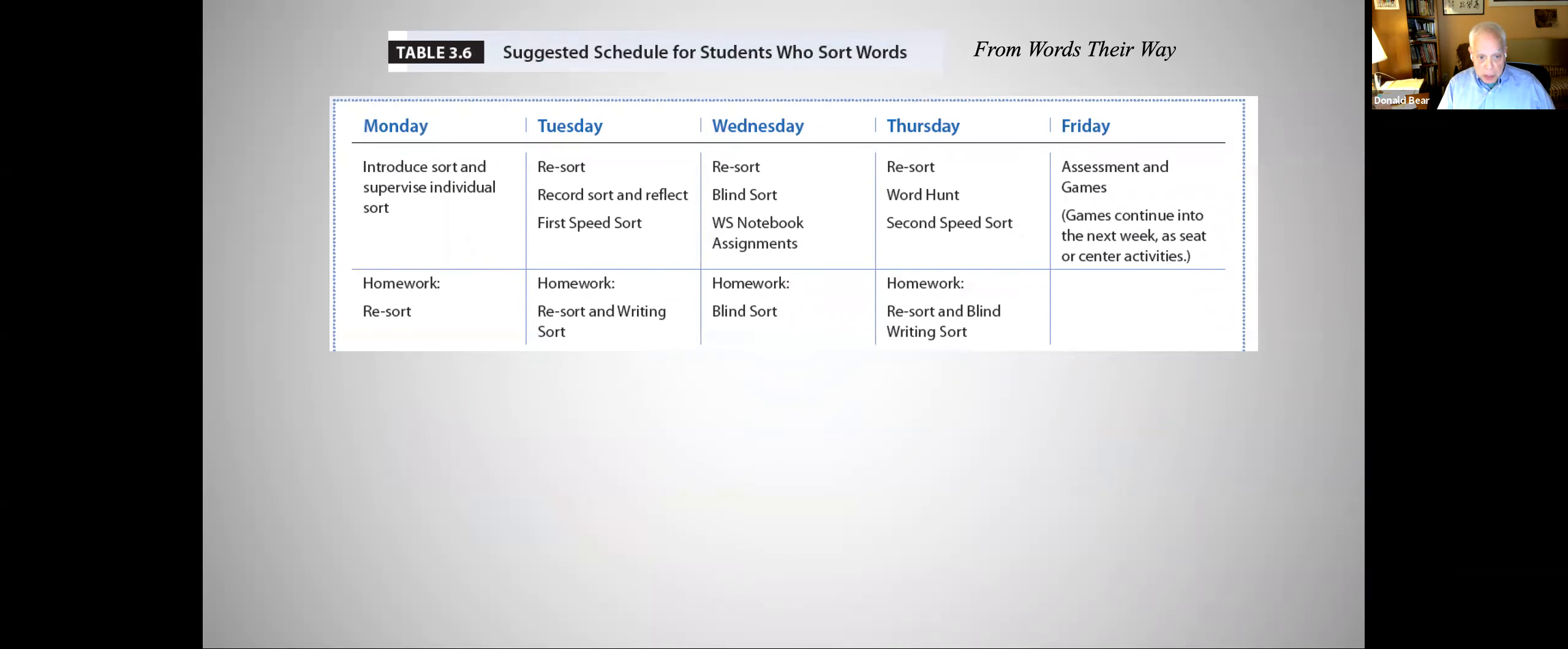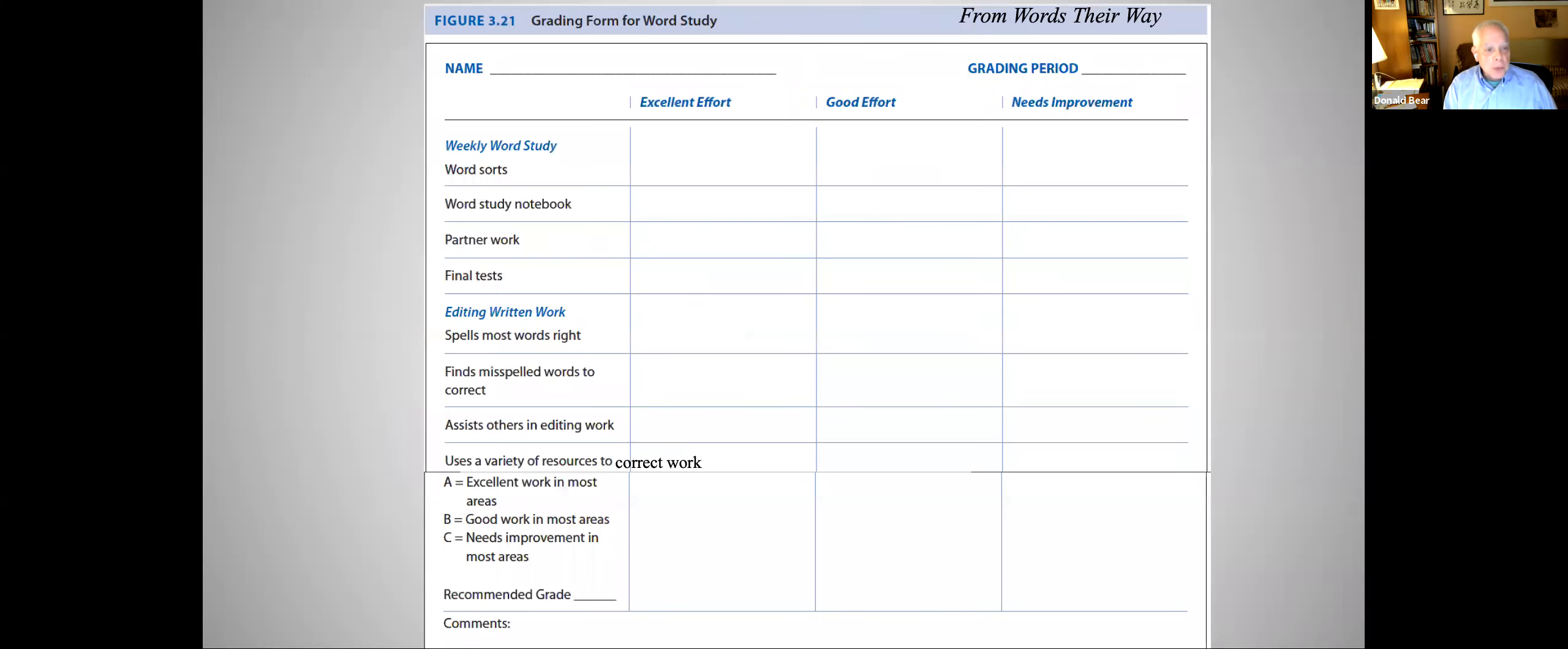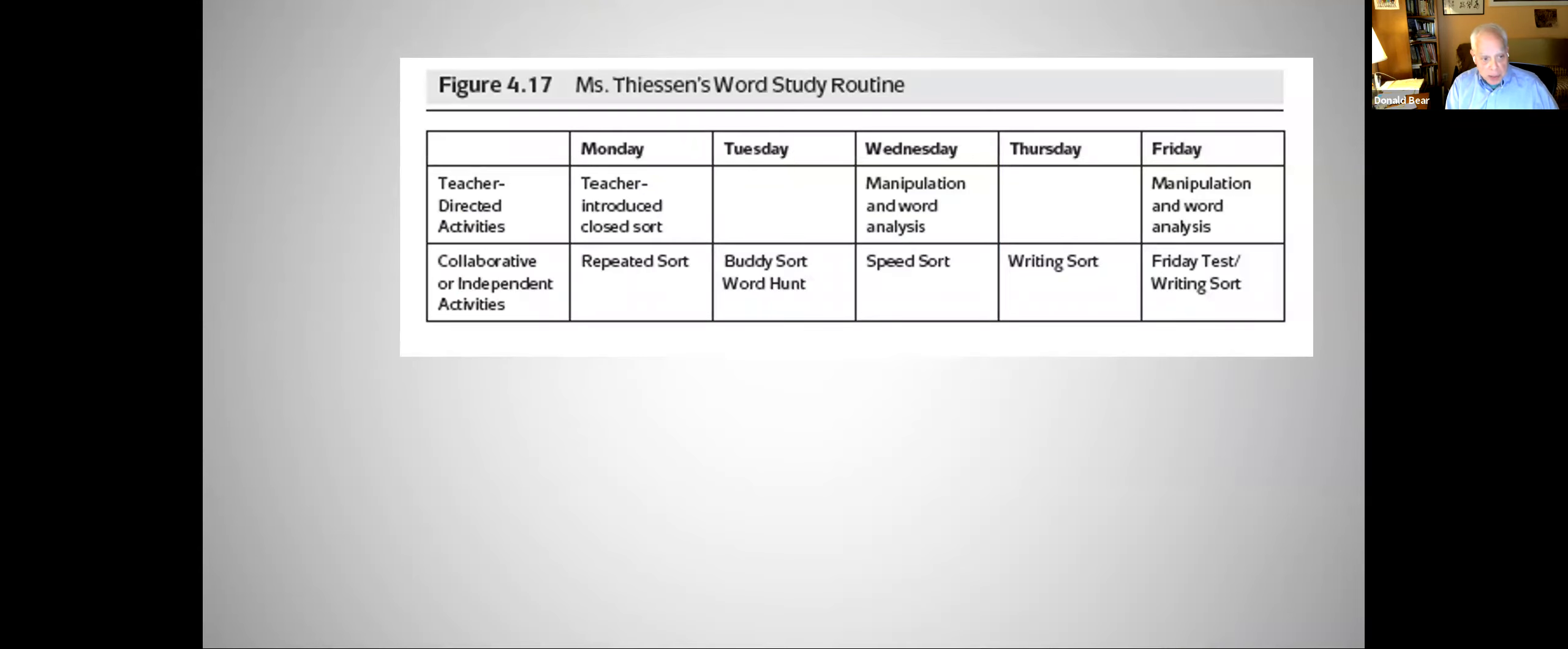And so here is a weekly schedule. And you can see the types of activities that students will do independently or with a partner. You see on Tuesday they'll do their first speed sort. On Wednesday, they'll do a word study notebook, a blind sort, a resort. These are activities that we need to teach the students over the first couple of weeks of school. I love this one. This is a grading form where the student is grading themselves. And you can see the types of activities that we expect them to do each week independently and with partners. And it also includes writing, editing their writing for spelling as well.